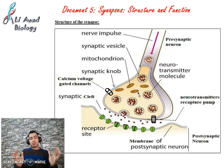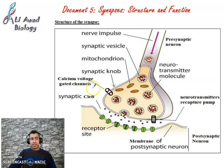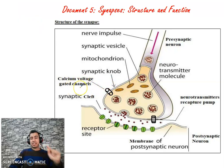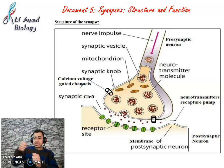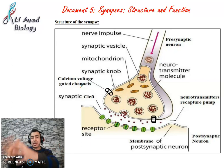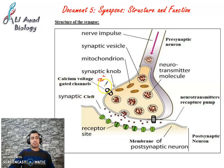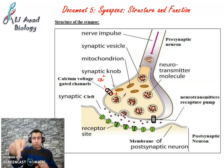I'm going to talk about the transmission of the nervous message at the level of the synapse. First of all, when the action potential arrives at the pre-synaptic end, this causes the opening of calcium voltage-gated channels. Calcium is found more in the extracellular medium, so it quickly enters inside the intracellular medium.